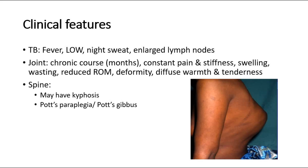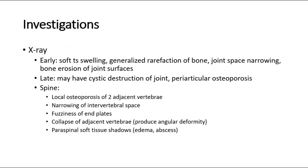This picture shows a gibbus deformity in a TB patient. To investigate for TB arthritis, we can do an X-ray where early signs include soft tissue swelling, generalised rarefaction of the bone, narrowing of the joint space, and there might also be bone erosion of the joint surfaces.